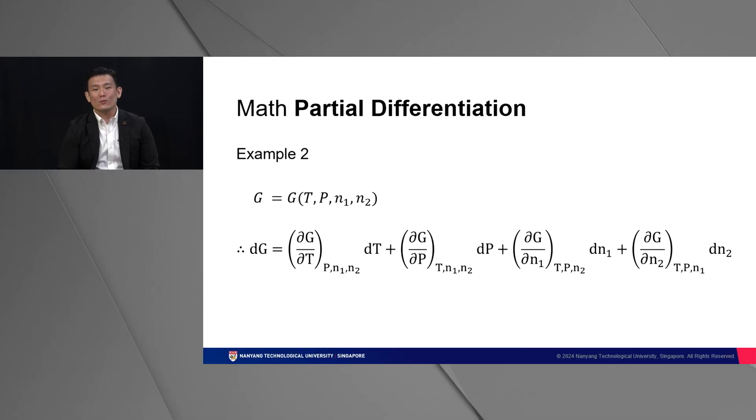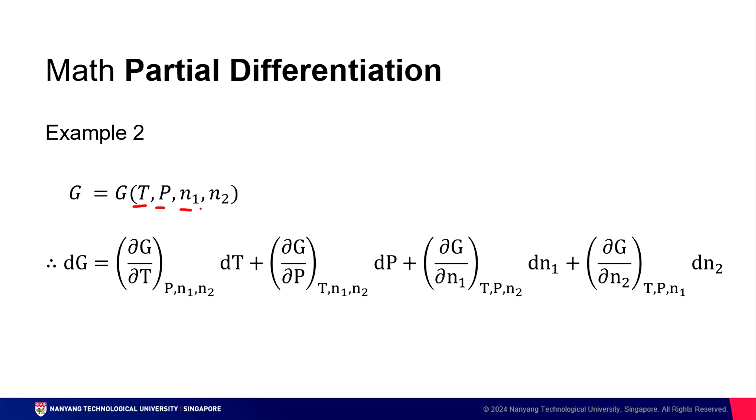And what happens when we've got multiple variables? For instance, we've got T, P, N1, N2. The process is exactly the same. You differentiate one variable while leaving the other three variables constant. So for instance, here I'm differentiating T first while keeping P, N1, and N2 constant. In the second term, we are differentiating P, keeping T, N1, N2 constant. The third term, we are differentiating N1, keeping T, P, N2 constant. And finally, we differentiate N2, keeping T, P, N1 constant. And you can repeat this operation for pretty much any number of variables.